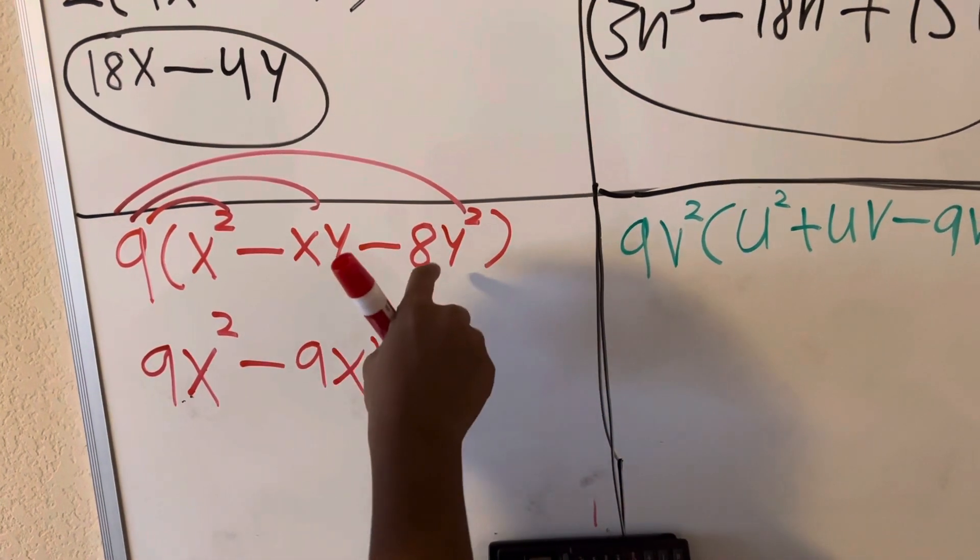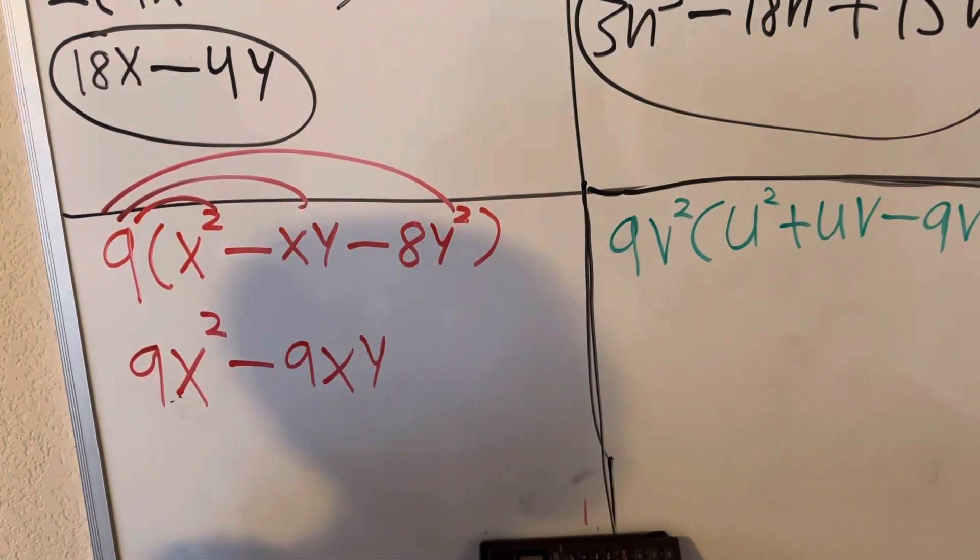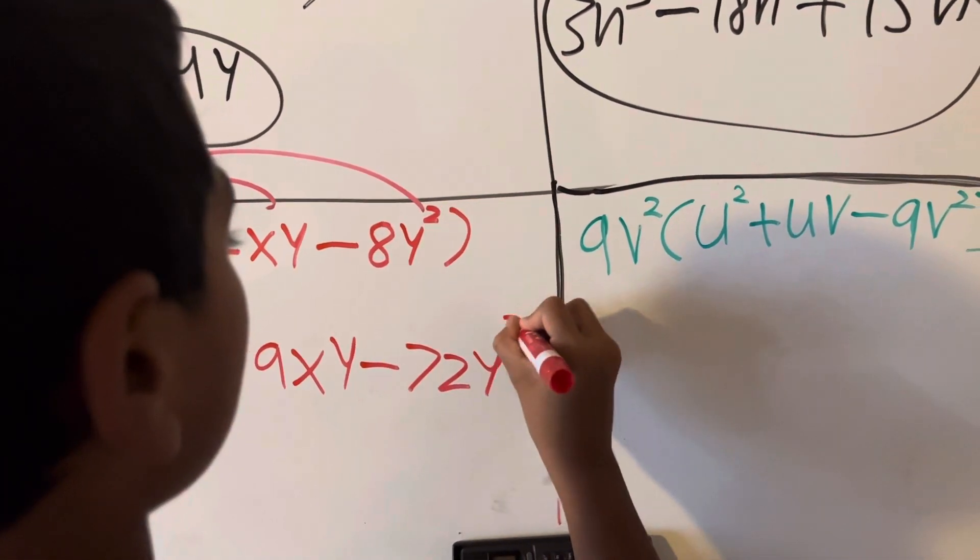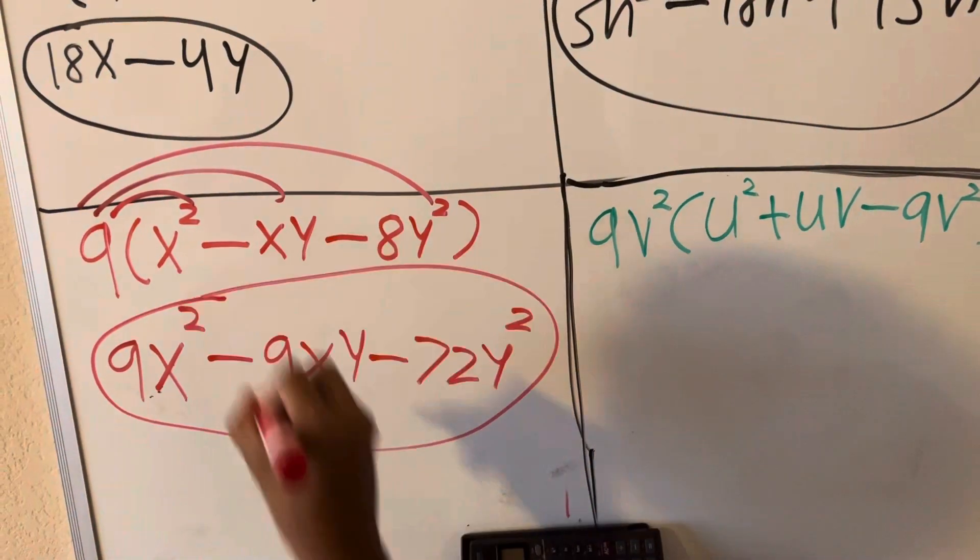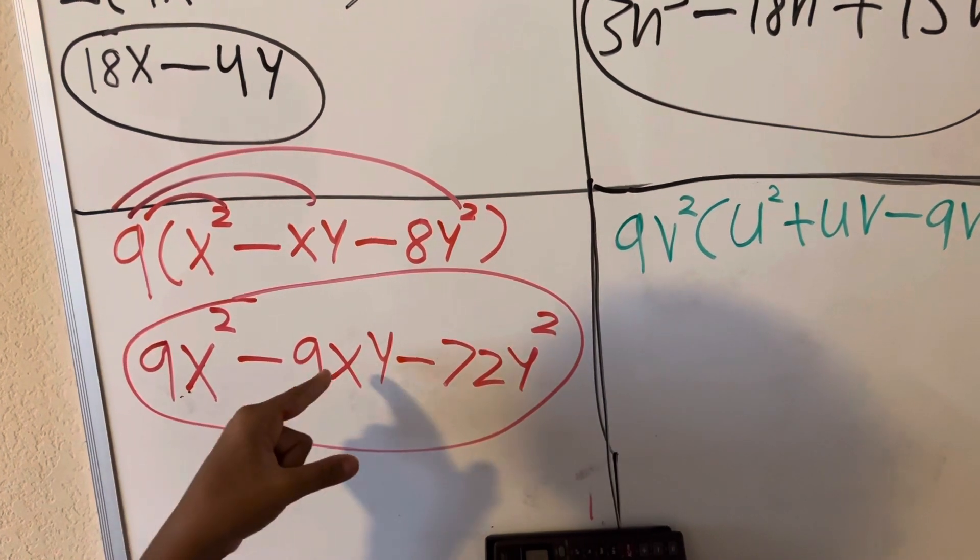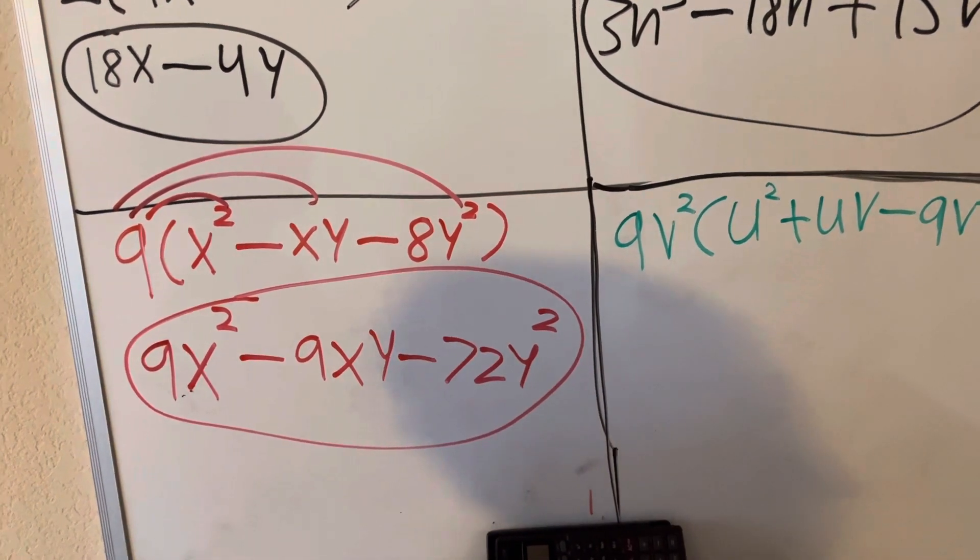And negative 8y squared times 9 is negative 72y squared. So our solution in number 3 is 9x squared minus 9 times x times y minus 72y squared.